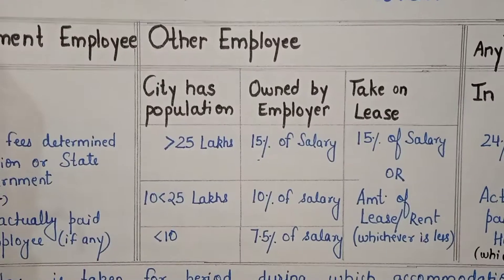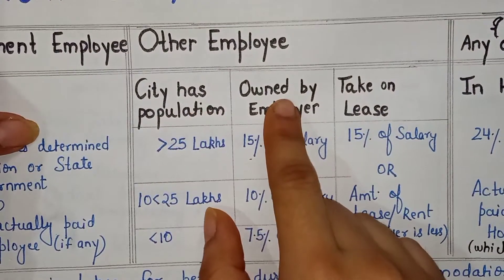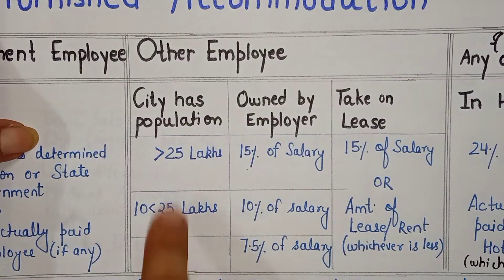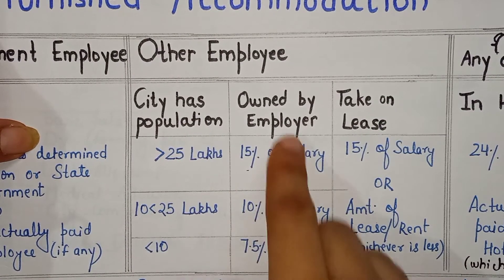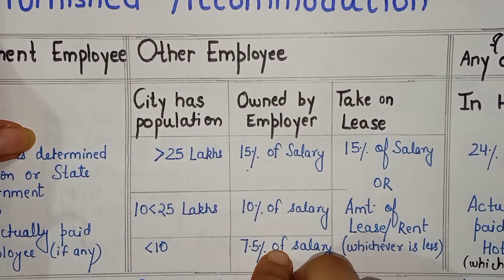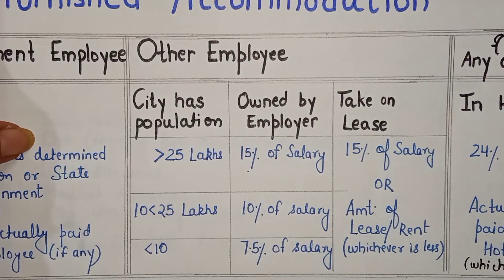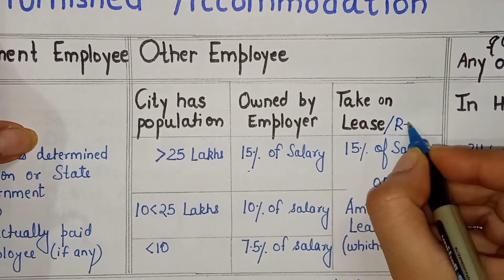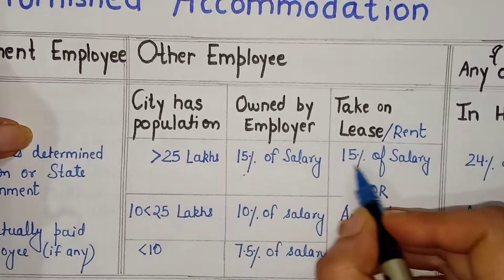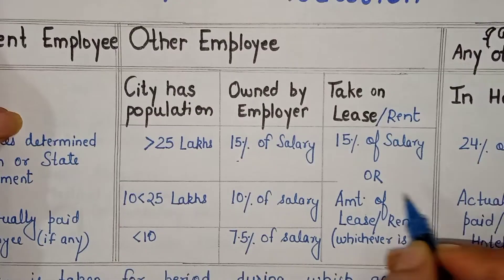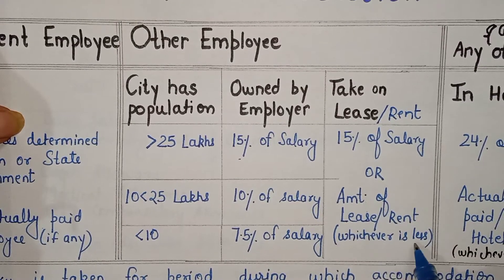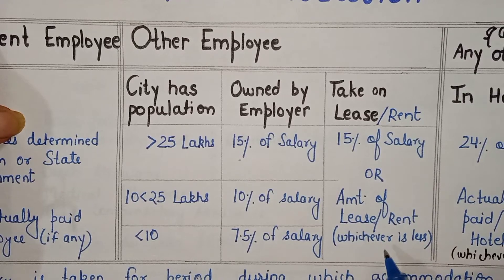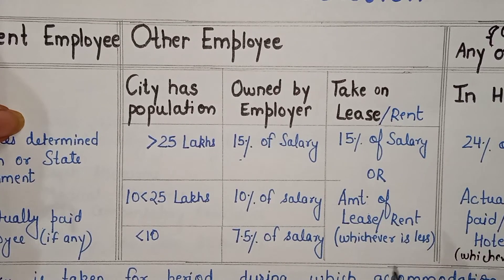The rule for other employees is: if the employer owns the accommodation, we look at city population. But here RBI has not taken it on its own — RBI took it on lease or rent. So the golden rule applies: 15% of salary OR the amount of lease/rent paid, whichever is less. The lower of these two figures will be our value of rent-free accommodation.